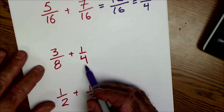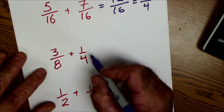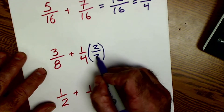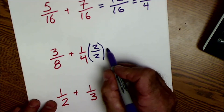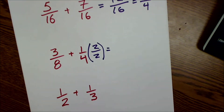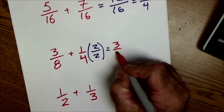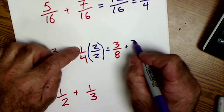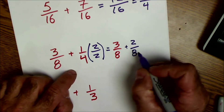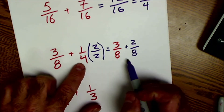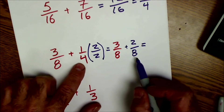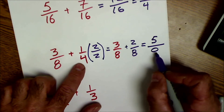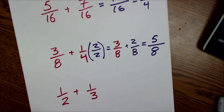Scenario two: my common denominator is going to be eight. I multiply one fraction by two over two to get an eight in the bottom. So I have three eighths plus two eighths. Now that I have my common denominator, I add across the top to get five, keep the bottom number eight, and I have five eighths.